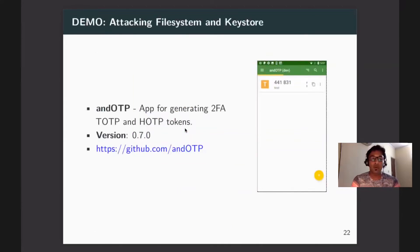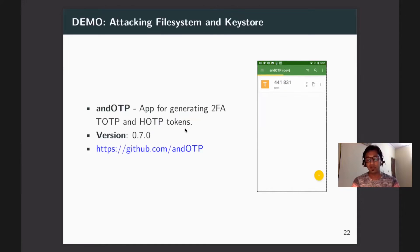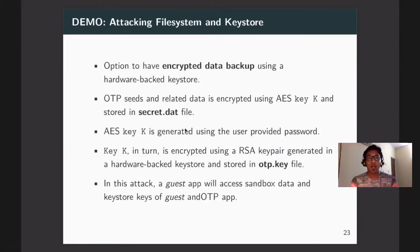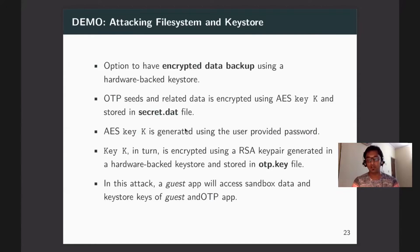For demonstration, the AndOTP application — a 2FA app for generating TOTP and HOTP tokens — is used. The application itself has no inherent vulnerability, but running it inside a virtual container introduces vulnerabilities. AndOTP provides functionality to encrypt data backup: OTP seeds and related critical information needed to generate OTPs are backed up using an AES key generated from a user-provided password, with an associated RSA key pair.